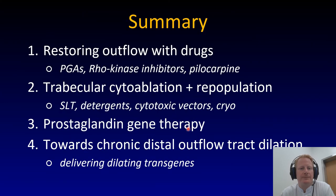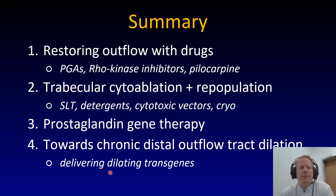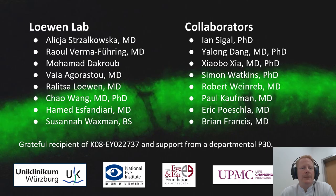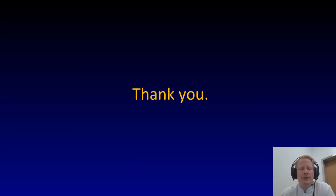In summary: we restored outflow with drugs — we've been doing this for some time and prostaglandins are particularly good at that. Trabecular cytoablation and repopulation — SLT does this quite well; the others are more or less experimental. Prostaglandin gene therapy has been shown to work. Chronic distal outflow tract dilation — I think we're pretty close to that. With this, I want to thank all my lab members and collaborators, and thank you for your attention.